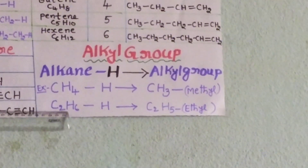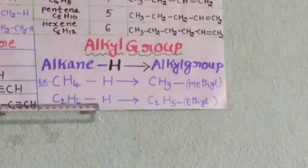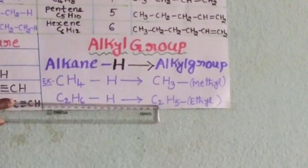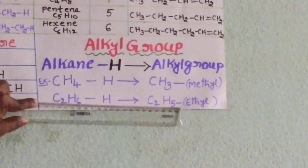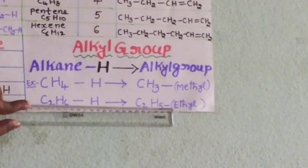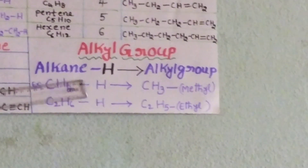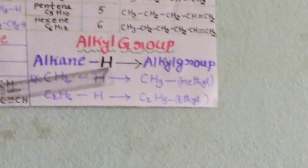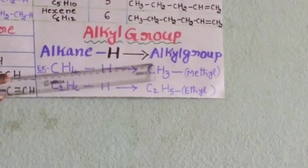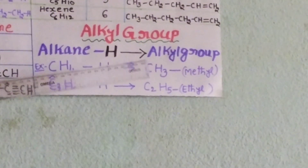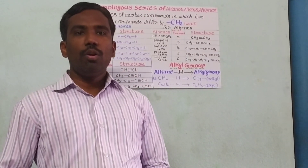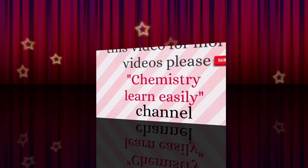One more example: ethane, C2H6. If we remove one hydrogen from ethane, the resultant structure is C2H5–, which we name as the ethyl group. In general, if you take any alkane and remove one hydrogen, the resultant structure is named as an alkyl group. I hope you have understood the concept of the homologous series of alkanes, alkenes and alkynes.